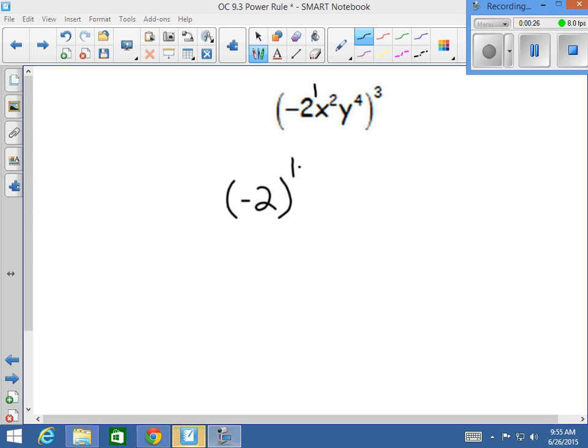So in this case, we have 1 times 3 because of the power rule. Then we have x to the second power times 3, and we get y to the fourth power times 3.